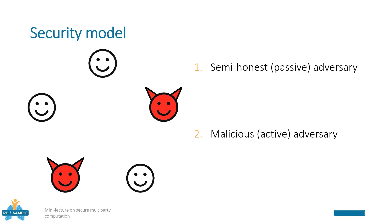There are two main security models that are usually considered. The first one is the semi-honest model, where one or more parties can collude and work together to gather information about the private inputs of the honest parties.